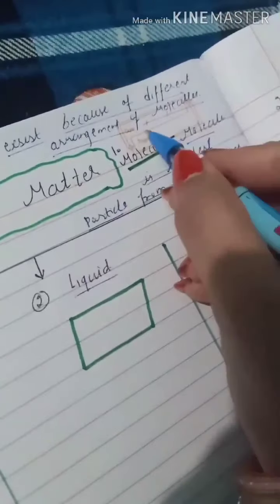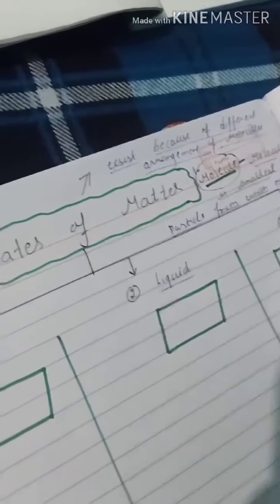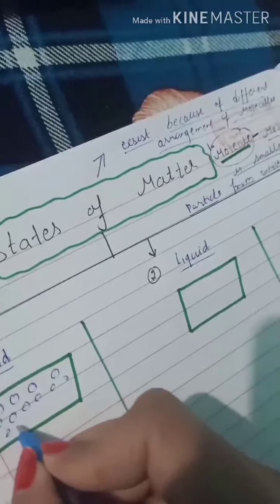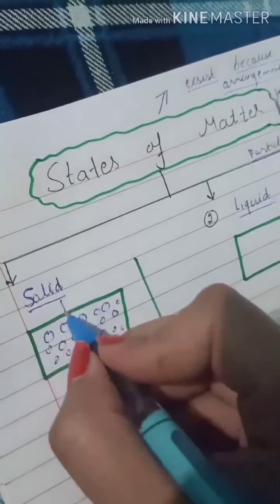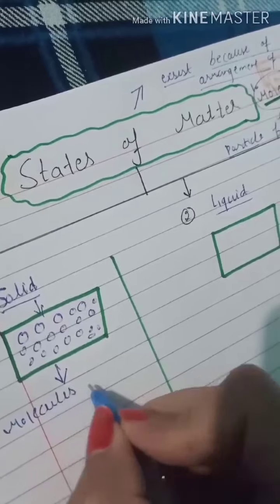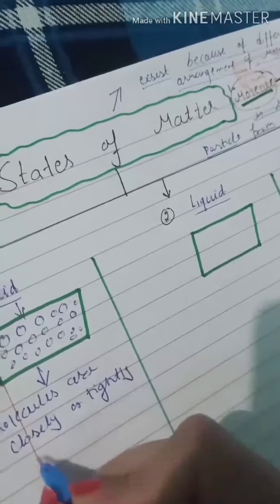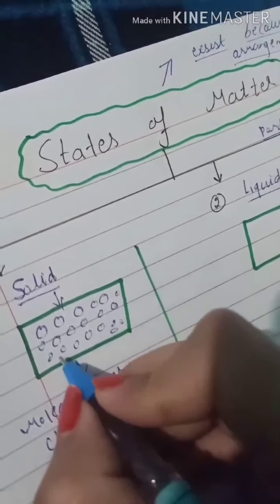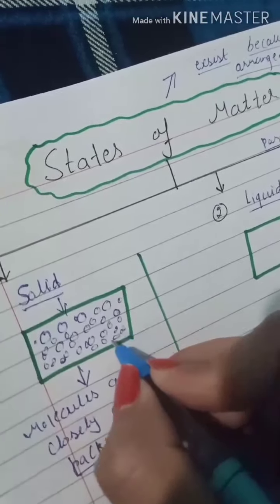These molecules are differently arranged in solid, liquid, and gas. In solid, molecules are closely or tightly packed — that is, they are close to each other.